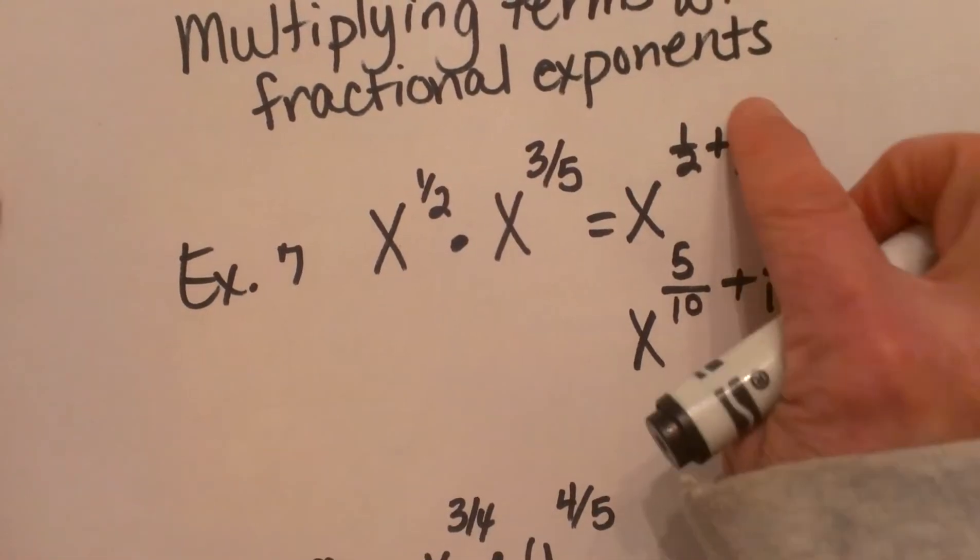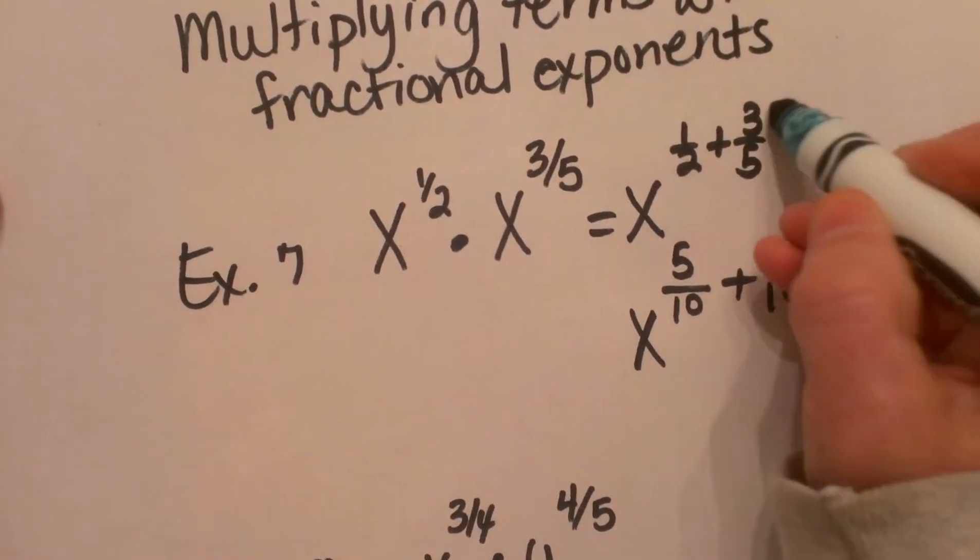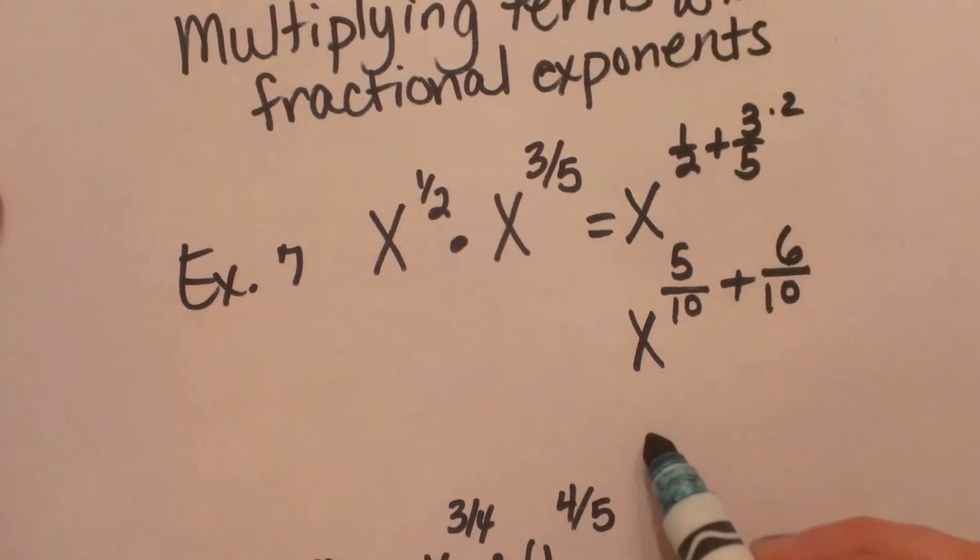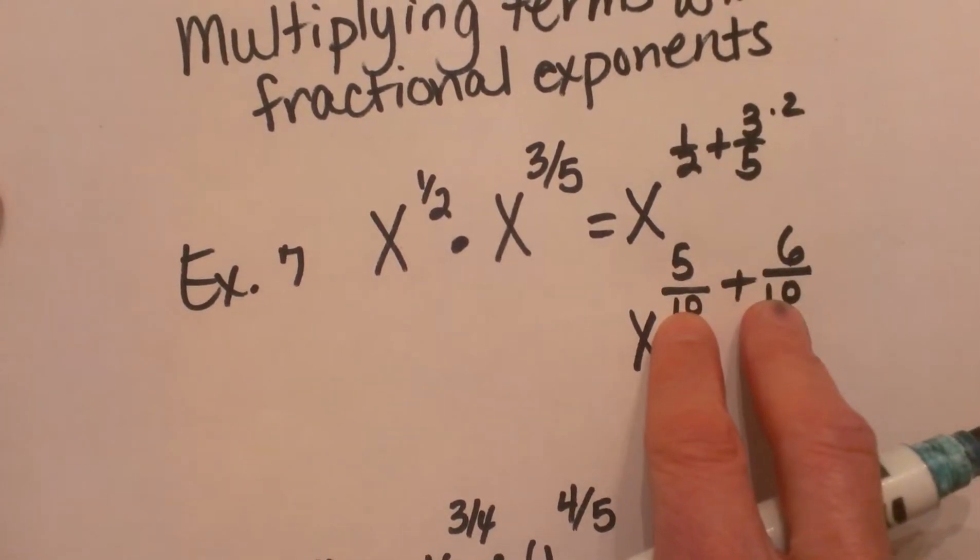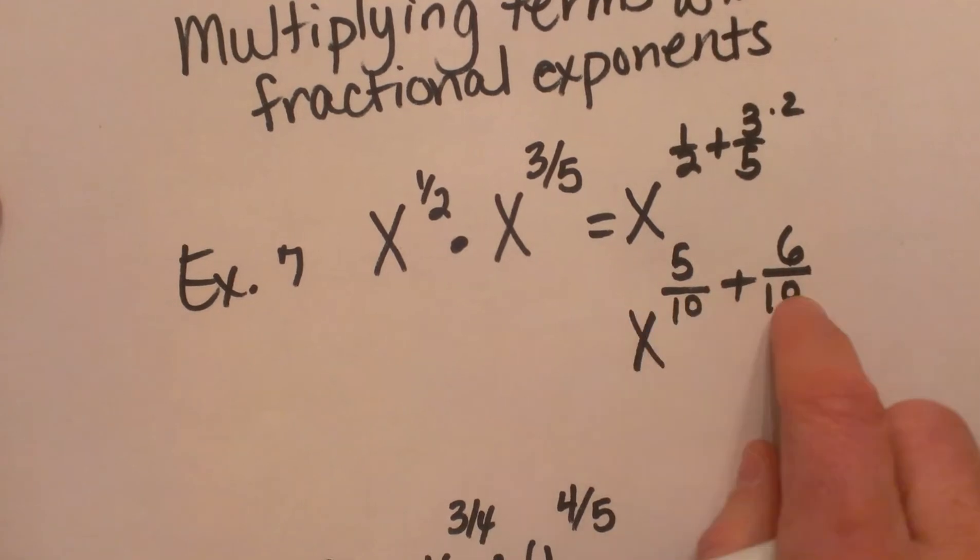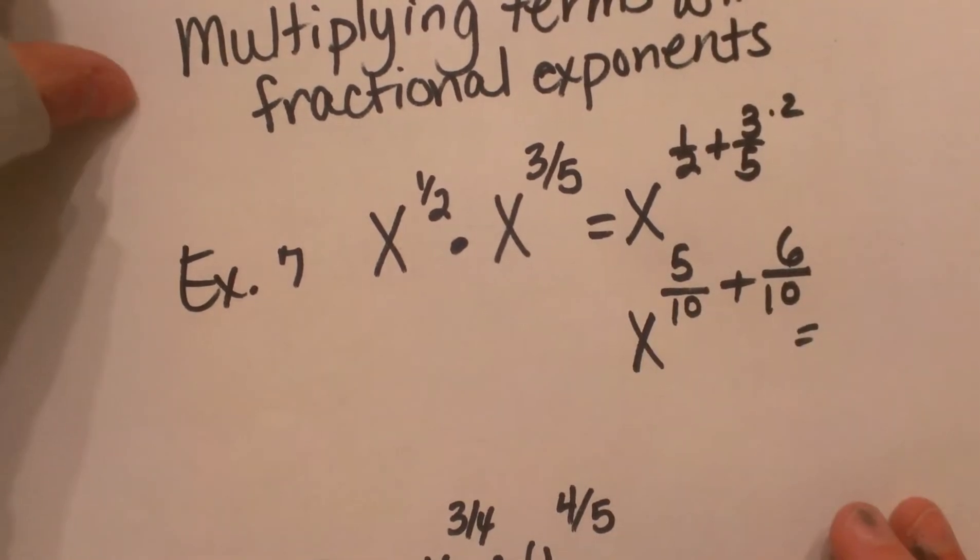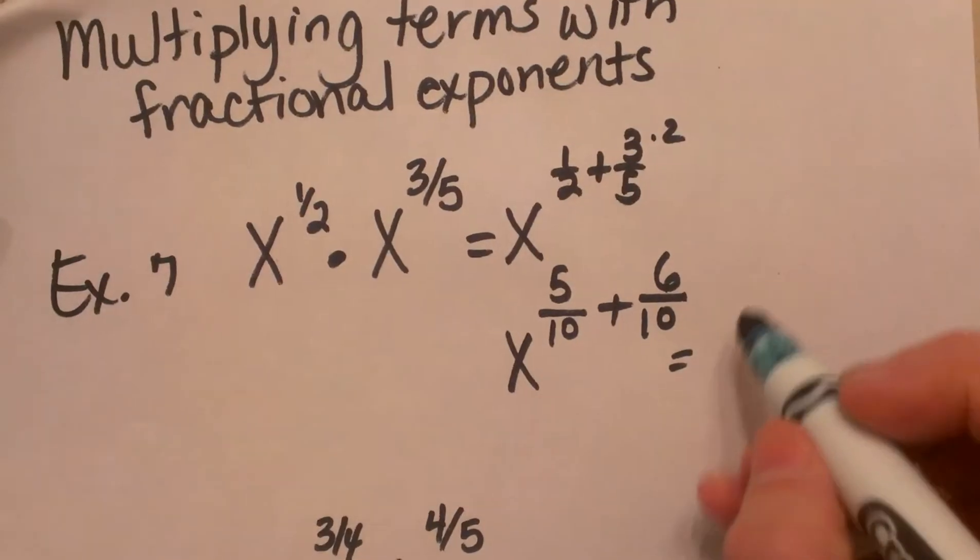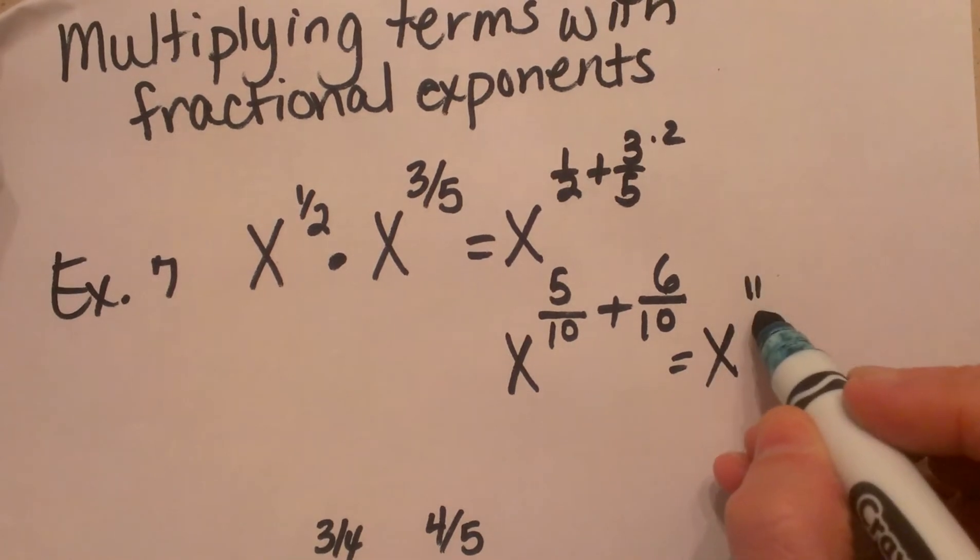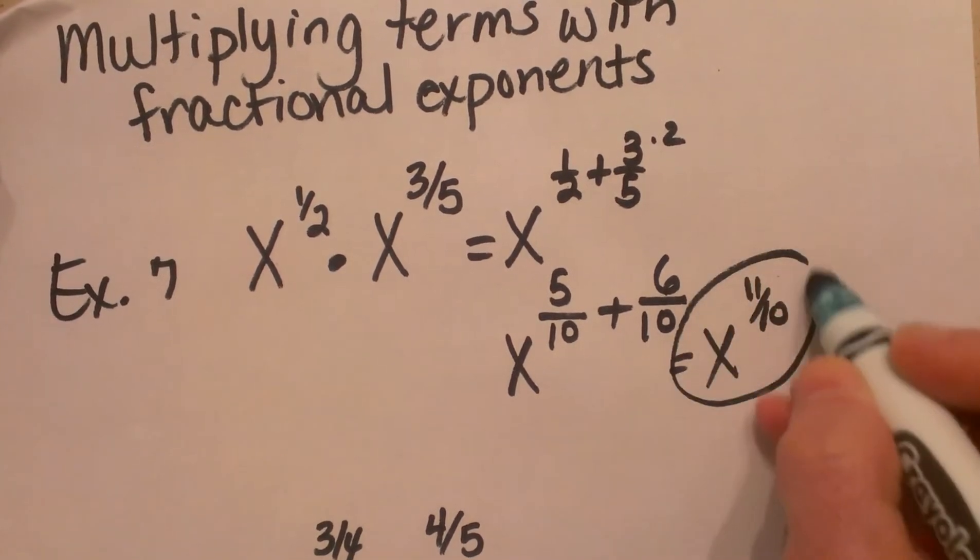And we're going to multiply 3 fifths by 2 and get 6 tenths. So when I add these two fractions together, I'm going to get 11 tenths. So this is going to simplify to x to the 11 tenths, and that is my answer.